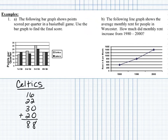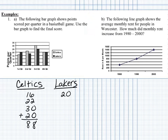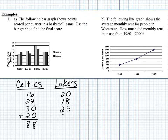Now let's look at the Lakers. The Lakers scored in the first quarter 20 points, the second quarter looks like about 18 points, the third quarter 25 points, and the fourth quarter 20 points. So we can add those together to get the final score for the Lakers of 82.